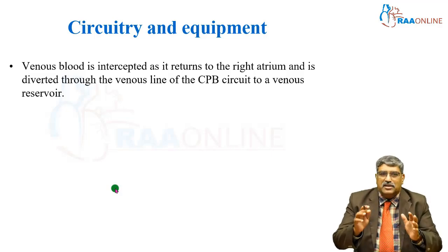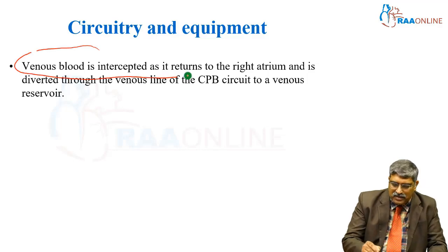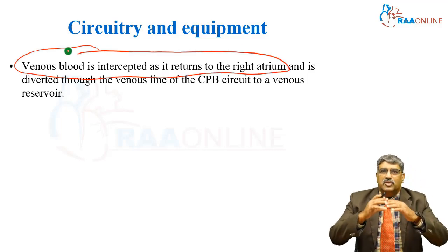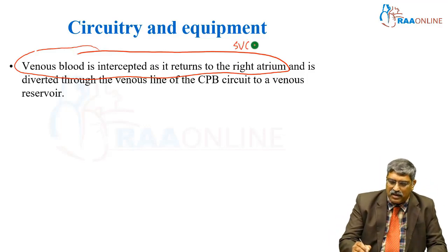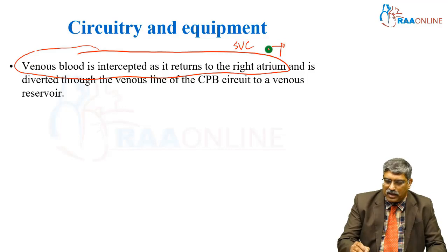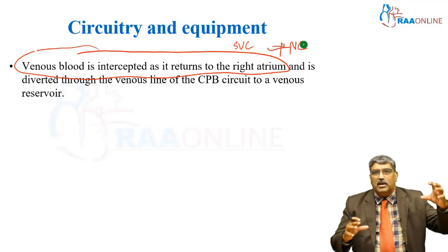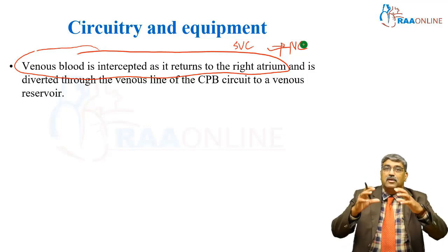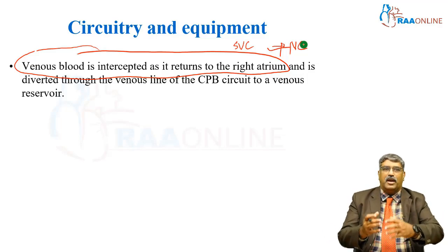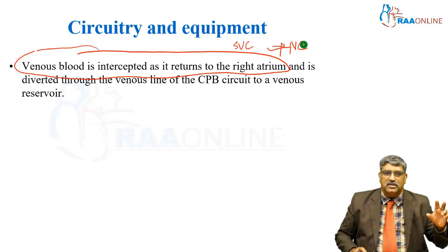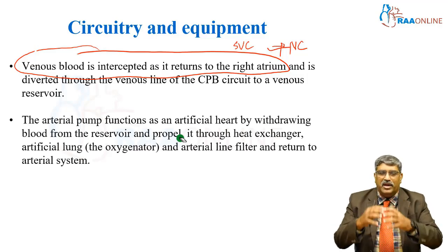Now coming to the various parts of cardiopulmonary bypass. The venous blood is intercepted as it returns to the right atrium. Venous blood from the upper part of the body comes via the SVC and from the lower part via the inferior vena cava. This SVC and IVC blood returns to the right atrium, where we place a cannula to take that blood into the venous reservoir.